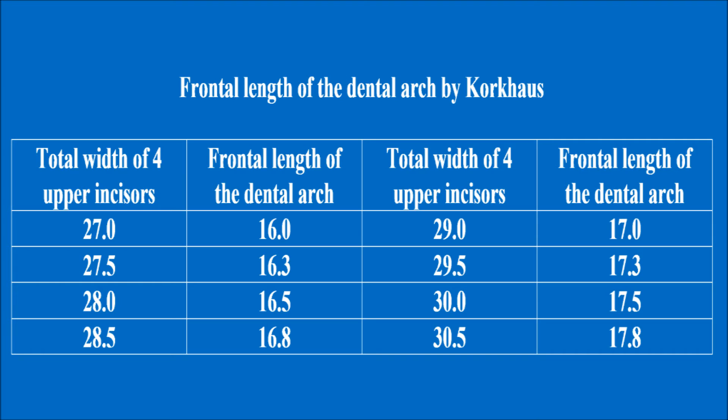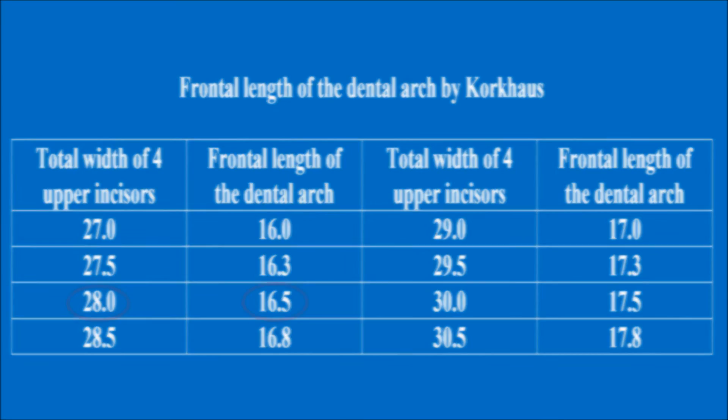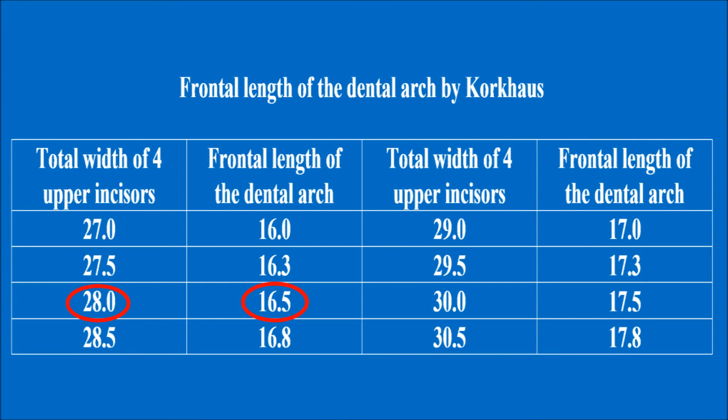Length of the mandibular arch is calculated by subtracting 2 mm from the frontal length of the upper arch, which corresponds to the average thickness of the central incisors' crown. For example, if the sum of 4 upper incisors equals 28 mm, the individual frontal length of the maxillary arch should equal 16.5 mm, and of the mandibular arch 14.5 mm.